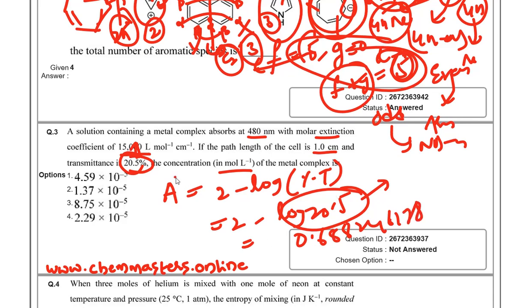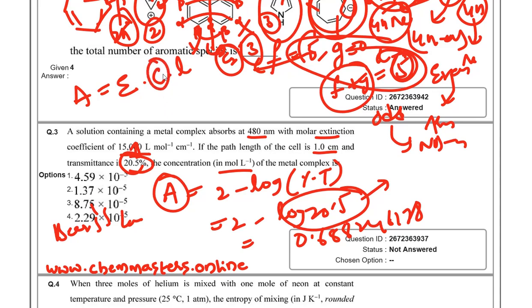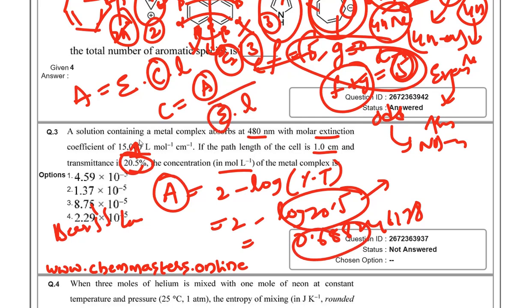After finding absorbance using Beer-Lambert's law — absorbance equals molar extinction coefficient times concentration times path length — rearranging gives: C = A / (ε × l). Substituting absorbance ≈ 0.6882, ε = 15,000 L·mol⁻¹·cm⁻¹, and path length = 1 cm, you can find the concentration as approximately 4.5 × 10⁻⁵ mol/L.